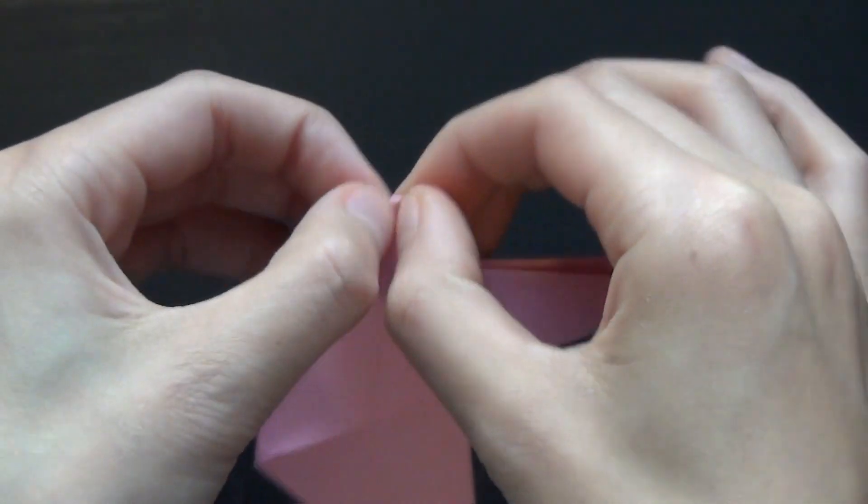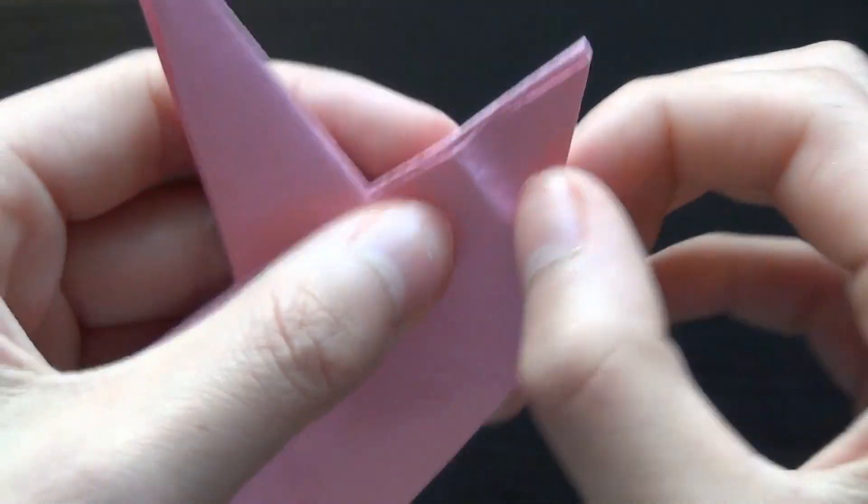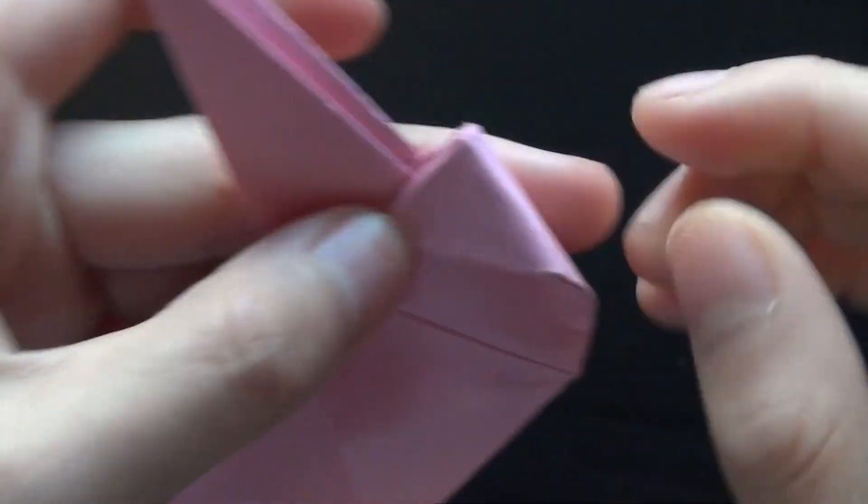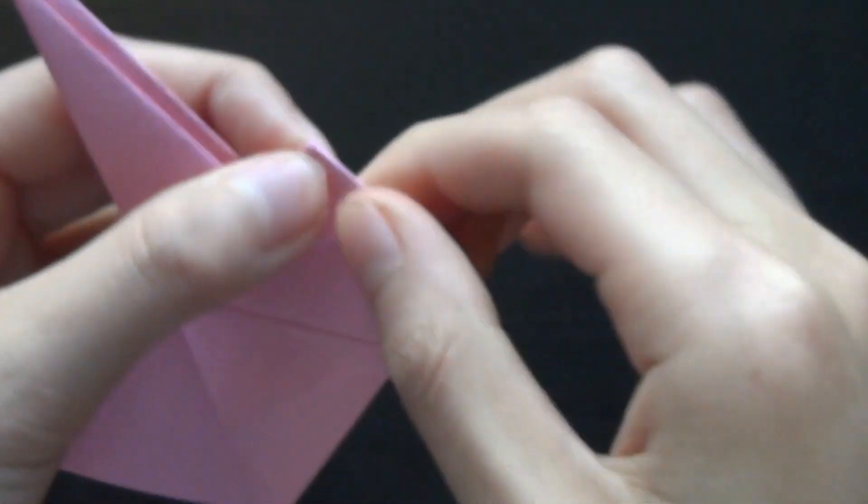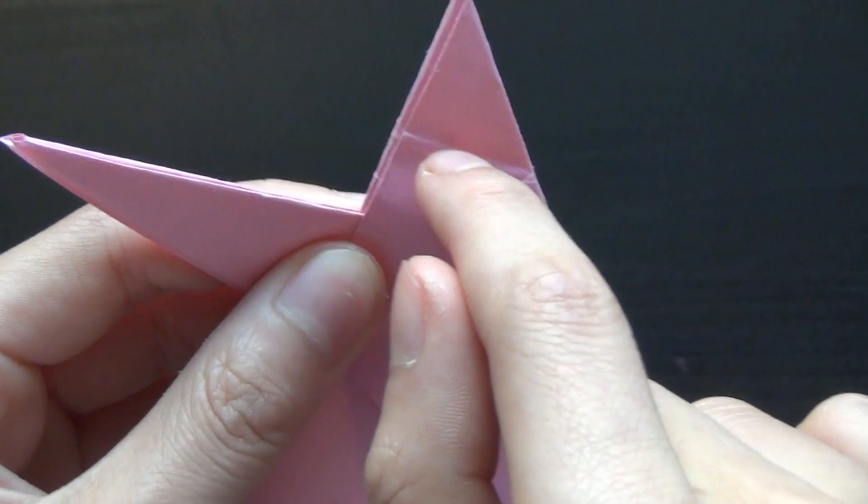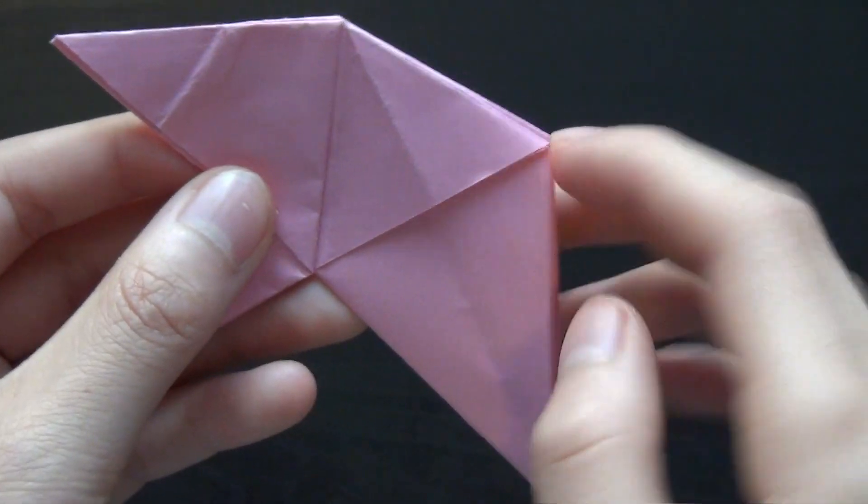Now you want to flatten this one out and flip it around and fold it back the other way. So now you should have a crease right here, and you want to make a crease from this point to here.